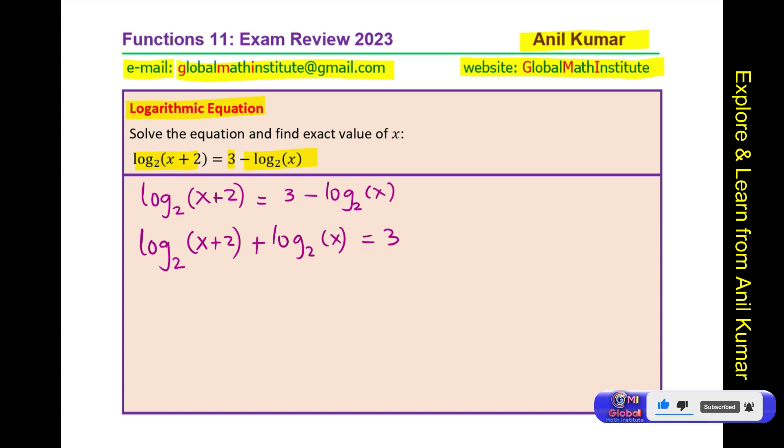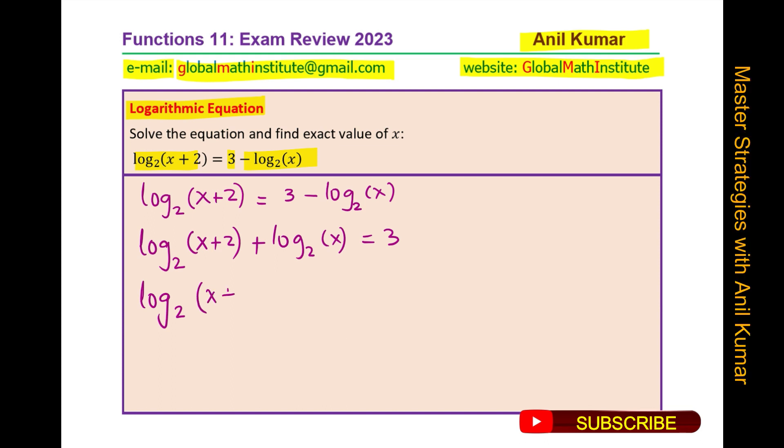Since we have the same base, we can combine the two log terms using the properties of logarithms. So it will be product of these two, x plus 2 times x which is equal to 3.